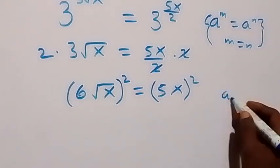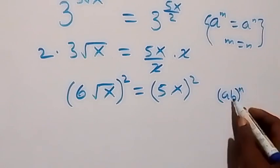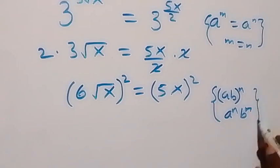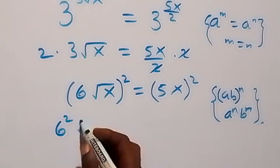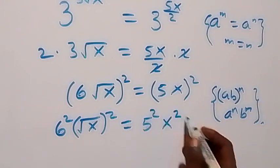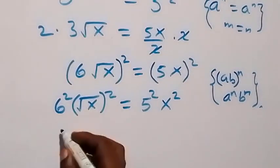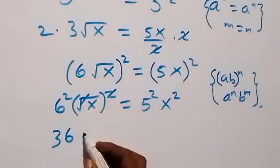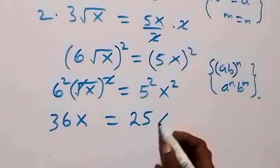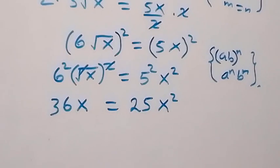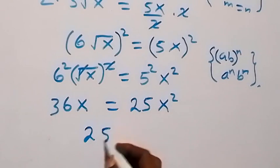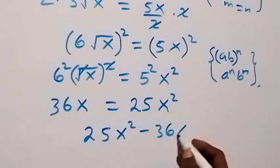From the law of indices, (ab) raised to power n equals a raised to power n times b raised to power n — that is, the power affects both numbers. So it implies that we have 6 squared times (root x) squared, equals 5 squared times x squared. That gives us 36x equals 25x squared. Taking 36x to the other side, this becomes 25x squared minus 36x equals 0.